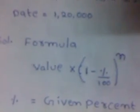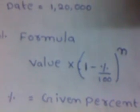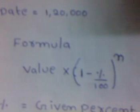And this is the formula which I told you previously. The formula is value times (1 minus percentage by 100) whole power n.